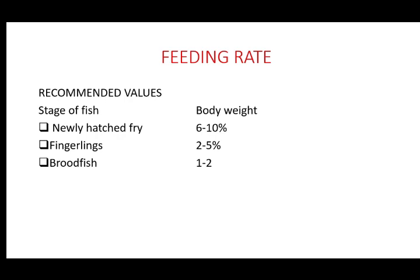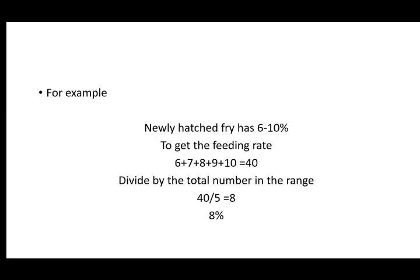For example, for newly hatched fry the range is 6 to 10%. To get the mean, you include all values: 6, 7, 8, 9, and 10. When you sum all these, you get 40. Divide by the total count in the range, which is 5. That gives 40 divided by 5, which equals 8% body weight. So the feeding rate for newly hatched fry is 8% body weight.